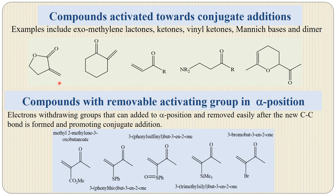Here are some compounds activated toward conjugate addition. Examples include exomethylene lactones, ketones, vinyl ketones, Mannich bases, and some dimers. There are also compounds with removable activating groups in the alpha position — electrophilic carbonyl groups that can be added to the alpha position and removed easily after the new carbon-carbon bond is formed, promoting conjugate addition. These can be added to the alpha position and removed after conjugate addition.